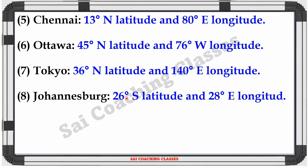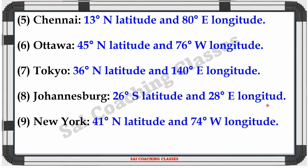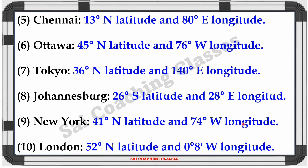Johannesburg: 26 degree South latitude, 28 degree East longitude. New York: 41 degree North latitude, 74 degree West longitude. London: 52 degree North latitude, 0 degree 8 minutes West longitude.